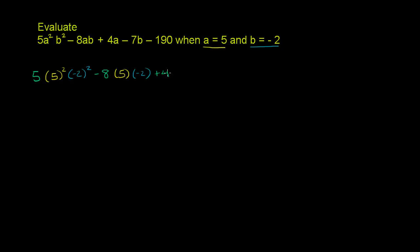Once again, a is 5. And then we have minus 7 times b. b is negative 2. b is negative 2. And then finally, we have a minus 190.